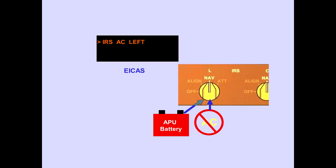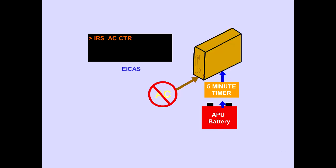The EICAS advisory message, IRS AC, indicates the IRS has lost its primary AC power source and has automatically transferred to DC power. The DC power will come from the APU battery, and the IRS will continue to supply position information. With a loss of AC power, the center IRS will operate on the APU battery for only 5 minutes. It then shuts down.